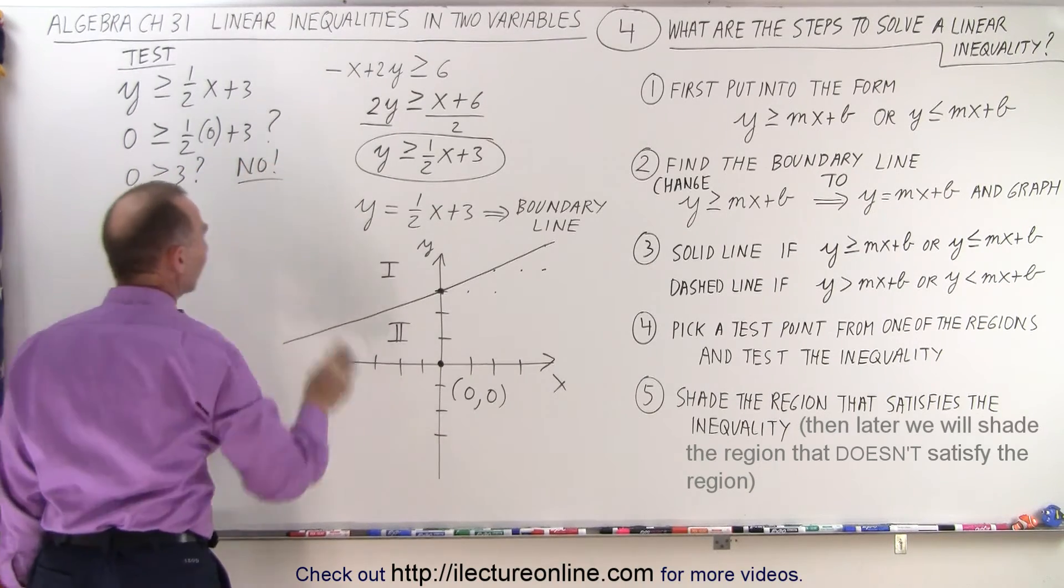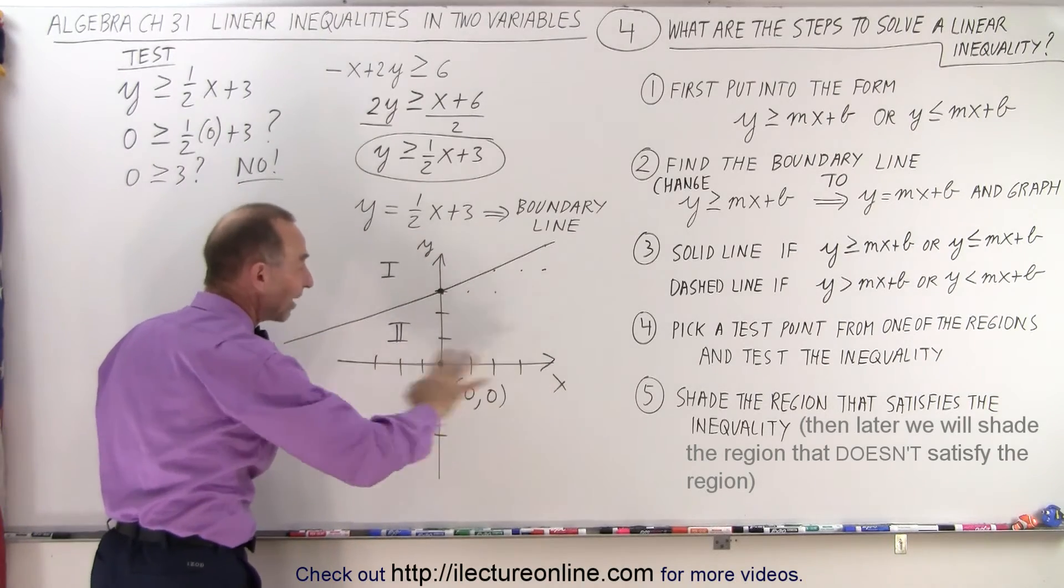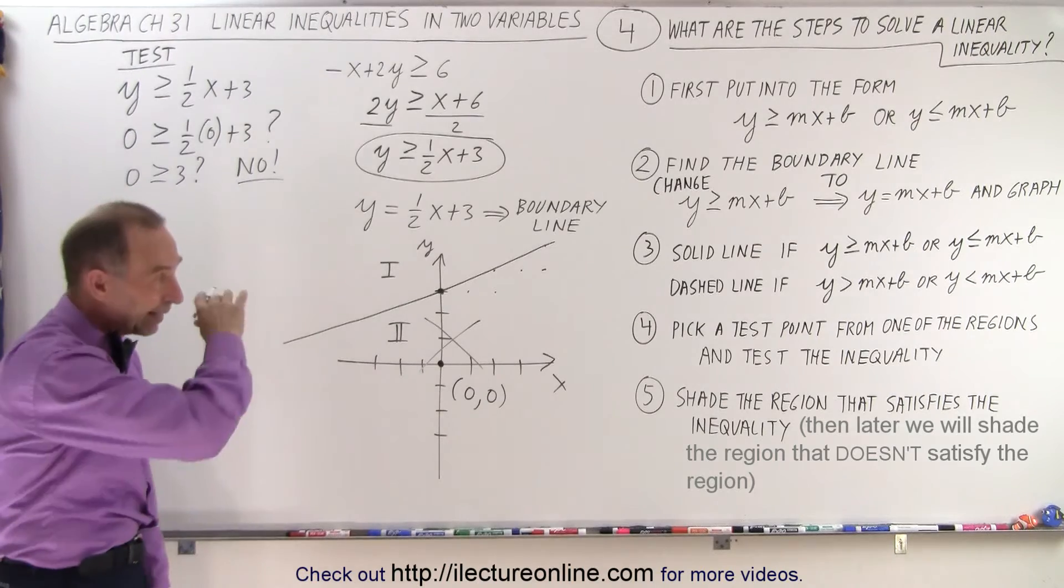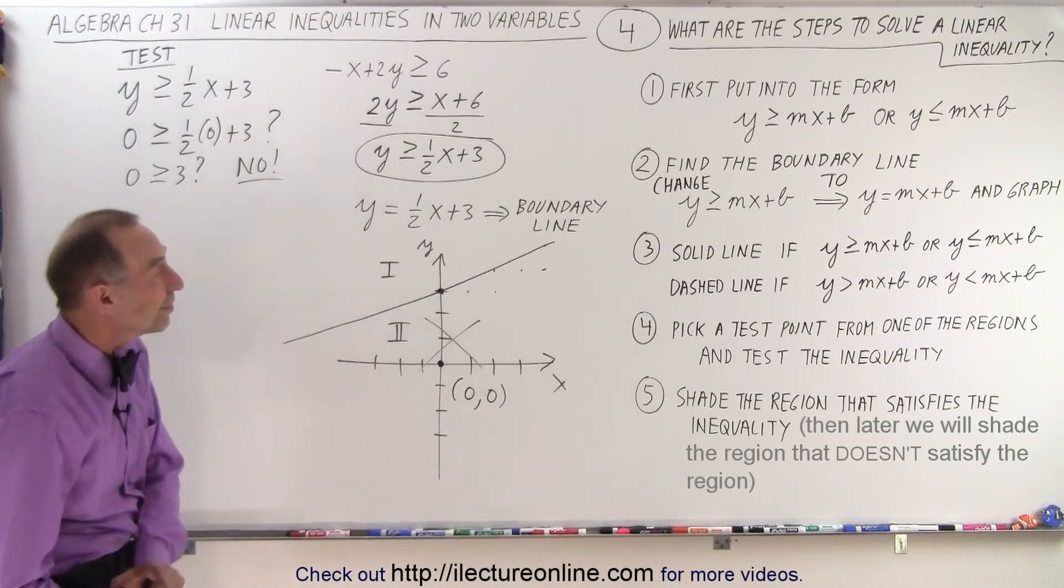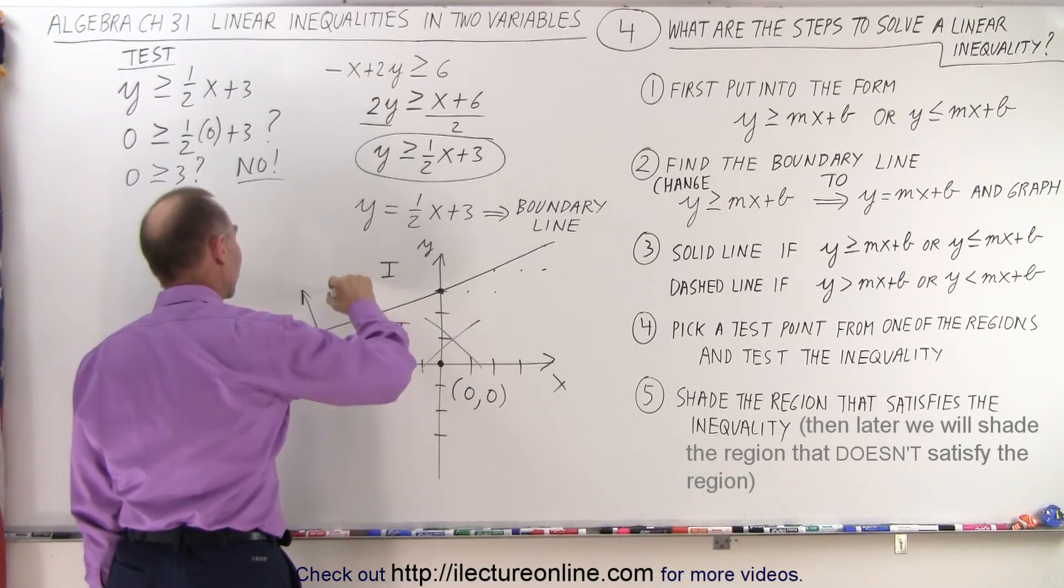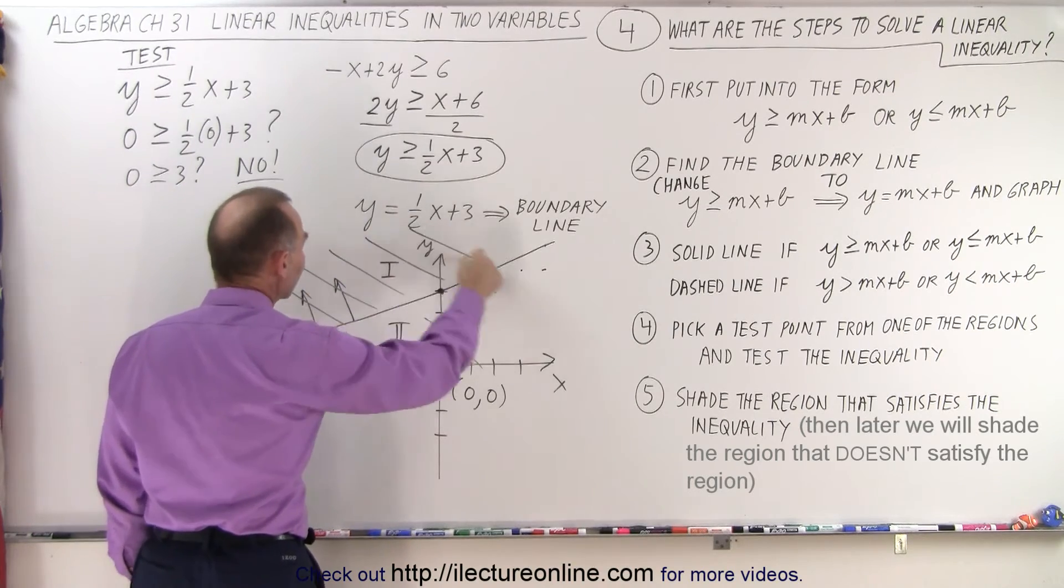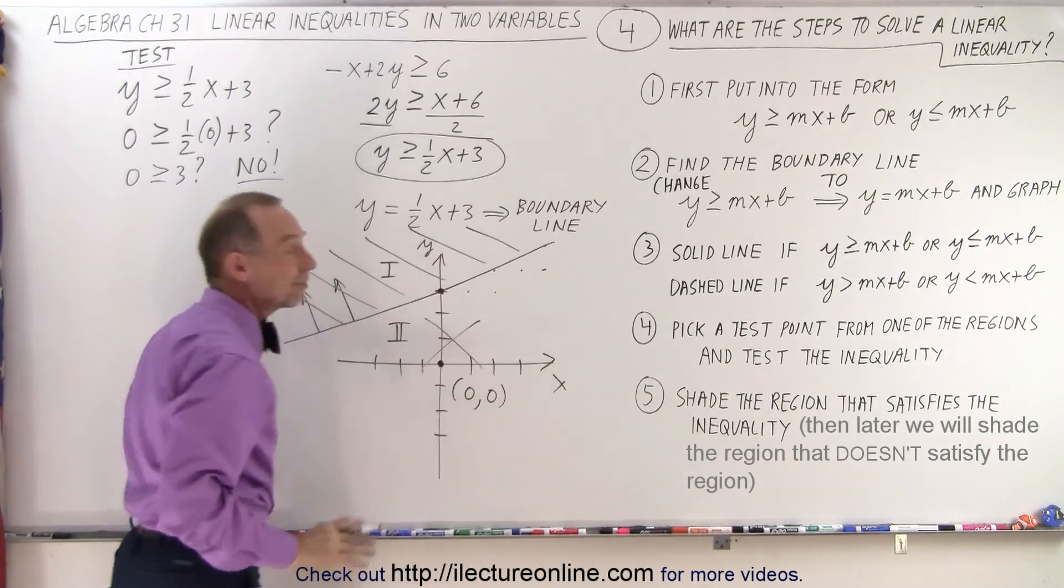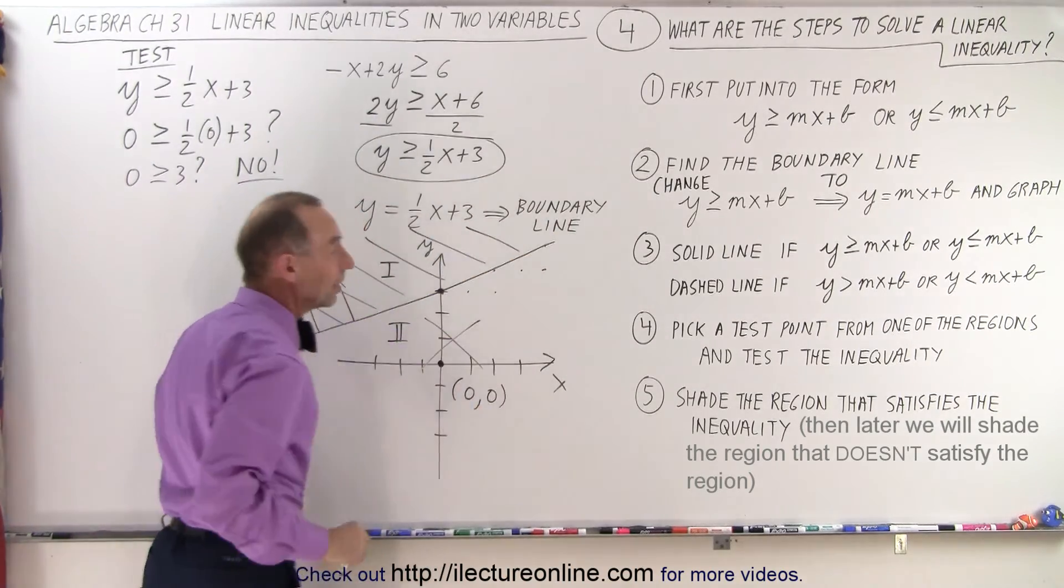Since the answer is no, I picked a point in the region that does not satisfy inequality. This region does not satisfy inequality. I like to put an x in it saying it does not satisfy inequality, which means the other region does. And so I indicate that by drawing arrows like this, or sometimes we simply can just go ahead and shade that area, which means the shaded area is the area that satisfied inequality. The solid line includes all the points on the line.